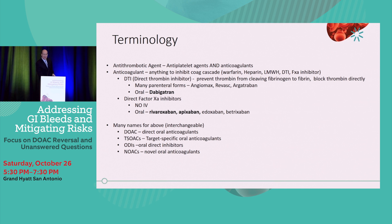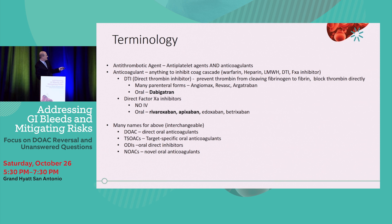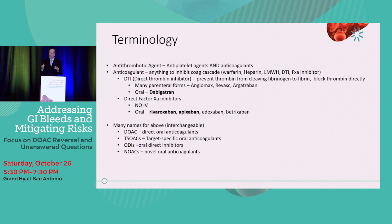The direct factor Xa inhibitors don't have IV formats at all. These are the drugs you may be more familiar with: rivaroxaban, which is Xarelto; apixaban, which is Eliquis; and then two others that are typically not given much in the United States. DOAC is direct oral anticoagulants; TSOAC is target-specific oral anticoagulant; ODI is oral direct inhibitor; and NOAC is novel anticoagulant. These all mean the same thing, so when conversing with colleagues, they may use any of these terms.